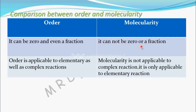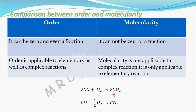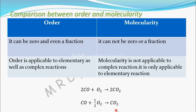Molecularity also cannot be a fraction. For example, two molecules of carbon monoxide combine with one molecule of oxygen to give two molecules of carbon dioxide. In reality, always an integer number of molecules will combine — two, three, four, or one. Sometimes we write the reaction as CO + ½O₂ → CO₂ just for simplicity, but in reality, one molecule of carbon monoxide and half a molecule of oxygen cannot combine.